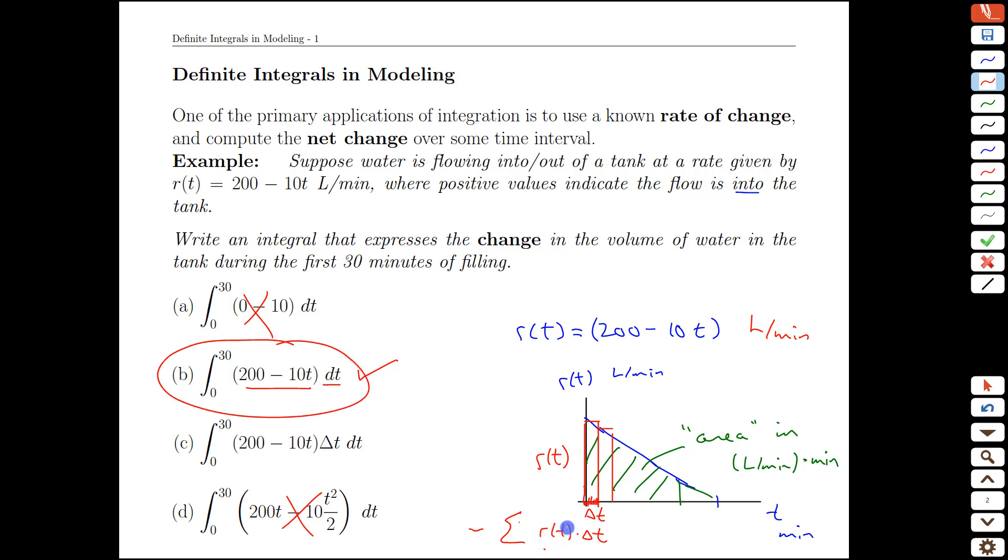This transformation of the idea of a sum, we have a rate in liters per minute times a small time interval in minutes, that gives us liters, and then we're going to add that up over a whole time interval. That's exactly what the notation of the integral does for us. So that would equal the change in volume in the tank.